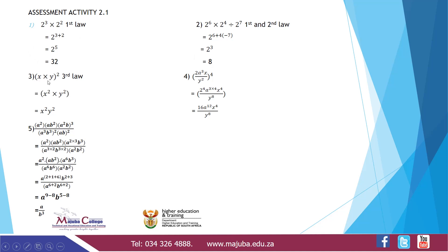Number 3: x times y, all raised to 2 — that's our third law. Whatever is inside the bracket gets multiplied by the exponent 2, giving x squared times y squared. For number 4, we have 2 times a cubed times x, divided by y squared, all raised to 4. This gives 2 to the power 4, times a to the power 3 times 4, times x to the power 4, divided by y to the power 8 (from 2 times 4). The answer is 16 times a to the power 12 times x to the power 4 divided by y to the power 8.